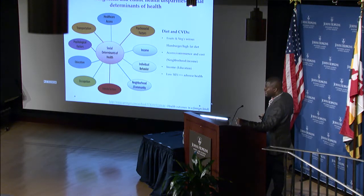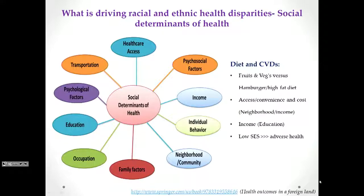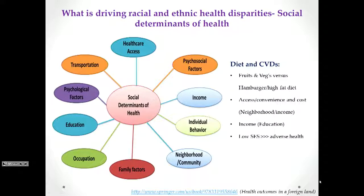When you look at the incidence of cardiovascular diseases, individual behavior regarding diet comes into play — access to healthy diet, convenience, and cost. Individuals who live in poor neighborhoods, such as minorities of low socioeconomic status, will most likely purchase fast food because it is easily accessible, convenient, and more affordable compared to fruits and vegetables. The cost is also influenced by income, which is a reflection of education. There is a complex interaction of various factors that affects the health of low socioeconomic status individuals, and the overarching theme is adverse health for minorities such as African Americans and Hispanics in the United States.